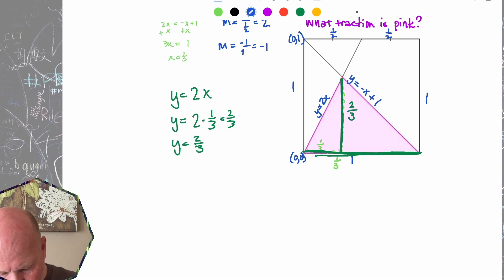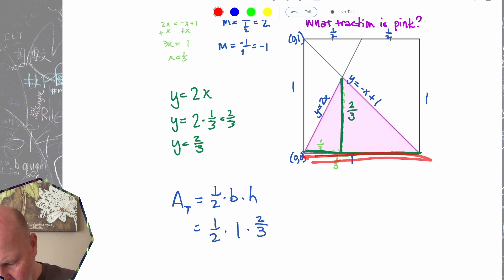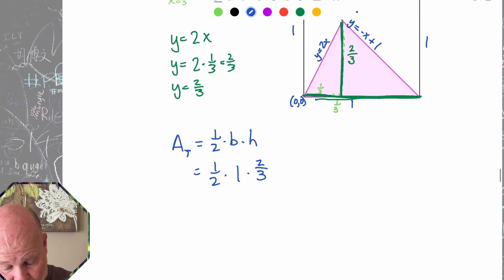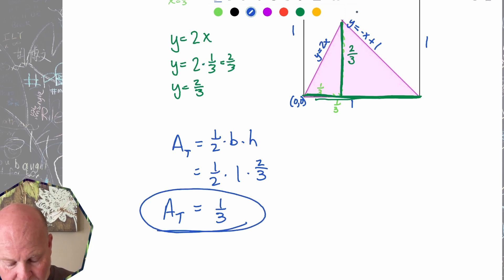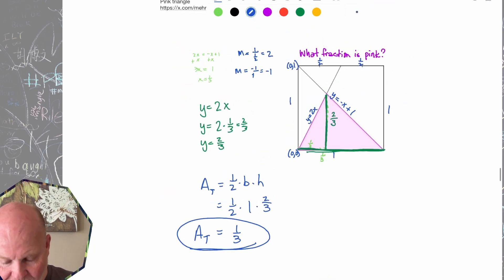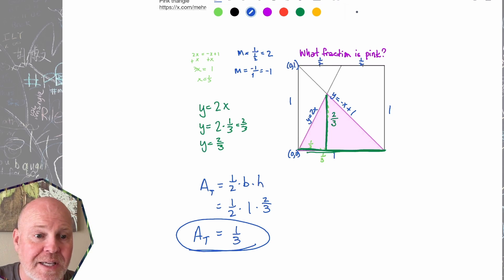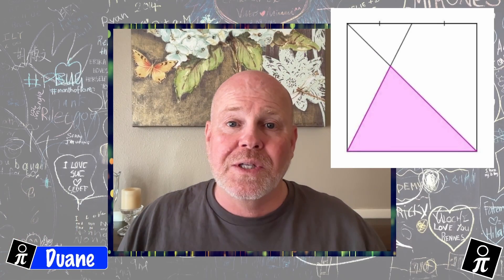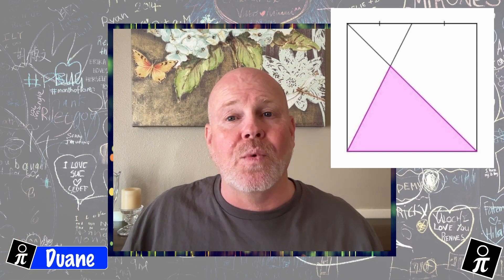Oh, let's do it in blue. So the area of that triangle is going to be 1 half times base times height, which is 1 half times 1 times 2 thirds, because the base is 1 and the height is 2 thirds. And then when we do the fancy schmancy math, we get the area of that triangle is equal to 1 third. And that is the answer to that question. So what is the fraction of that pink triangle? It's 1 third.